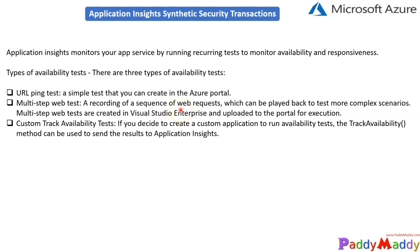The second option is multi-step website testing, where you record with the help of Visual Studio in a project and extract all the URLs. You open the specific application you want to monitor and it lists all the URLs within a text file. That text file is then uploaded to the multi-step web test project and uploaded to the Azure portal. The third option is custom track availability test, where you create a custom application and run the availability test using a method called track availability within your application code, which sends results back to Application Insights.